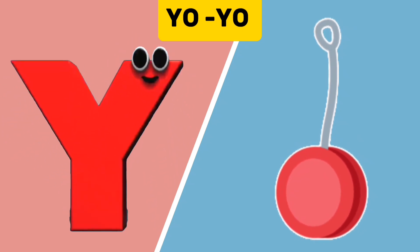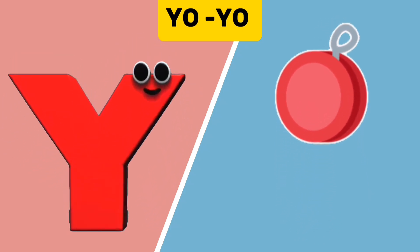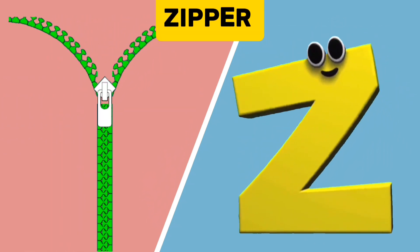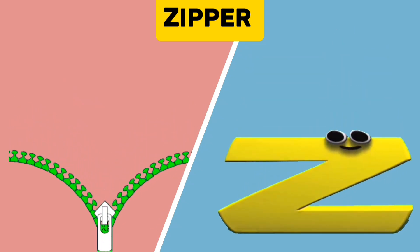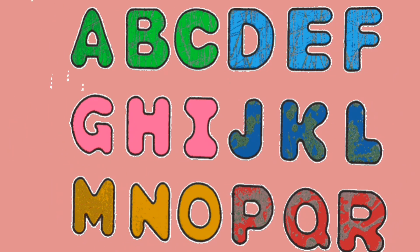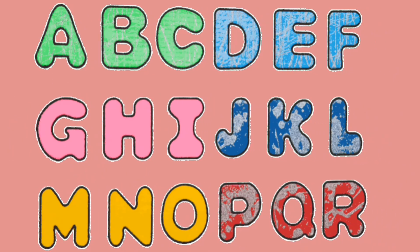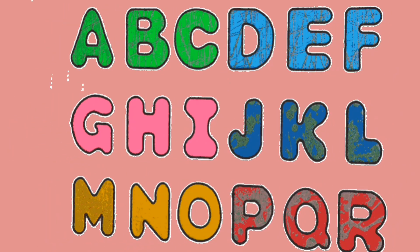Y is for Yo-Yo. Y, Y. Yo-Yo. Z is for Zipper. Z, Z. Zipper. It's the letters of the alphabet.